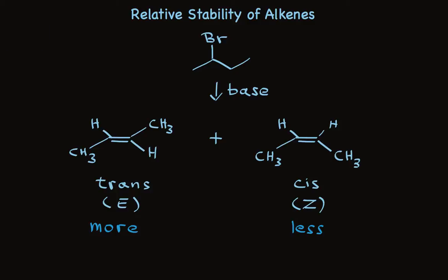There's the trans-2-butene and the cis-2-butene. And as I've noted here, we get significantly more of the trans than the cis. Why is that?